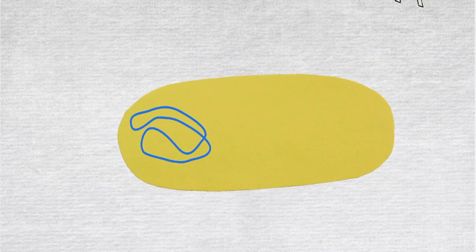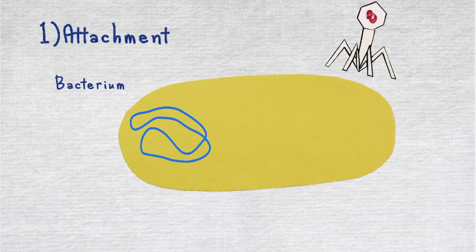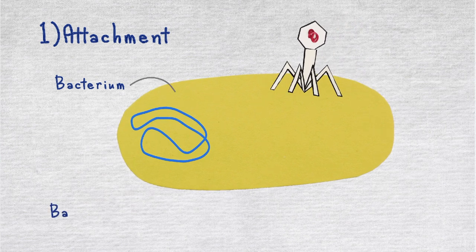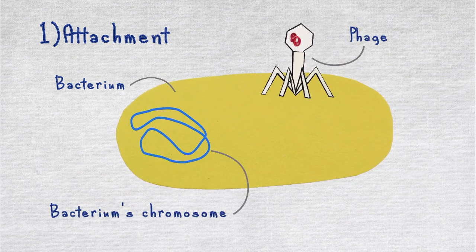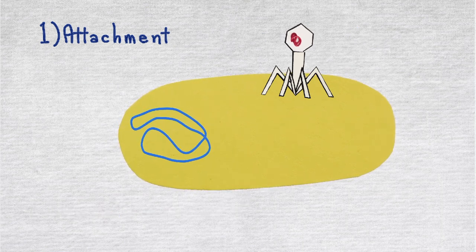The first one is called the attachment stage. Here, proteins in the tail of the phage bind to a specific receptor, which in this case is a sugar transporter, found on the surface of the bacterium.